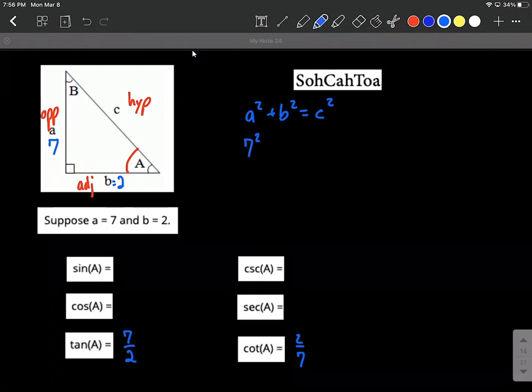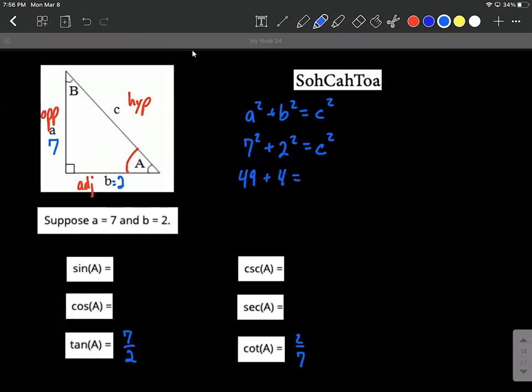We have 7 for a, 2 for b, and we still don't know c. So let's solve this down and find c. So 7 squared is going to be 49, 2 squared is 4. We'll leave it as c squared for right now. With a little reducing down on the left-hand side we get 49 plus 4 makes 53.